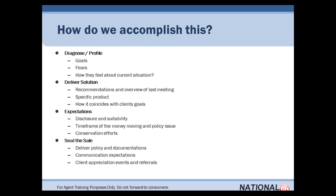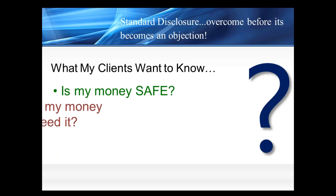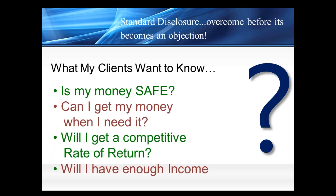We have to set expectations — set the disclosure and suitability, set the timeframe of the money moving, how the policy is going to be issued, and talk to them about conservation efforts of other financial advisors or institutions trying to get them to move their money back. Then we have to move on to sealing the sale. We have to have a sales process that is structurally sound and sets the foundation for overcoming objections throughout the whole entire sales process — not just to get the sale, but to make sure the sale is there and that they become advocates to your business. We need to seal the sale, deliver the policy and documentation, communicate expectations, educate them, and have client appreciation events to get referrals.